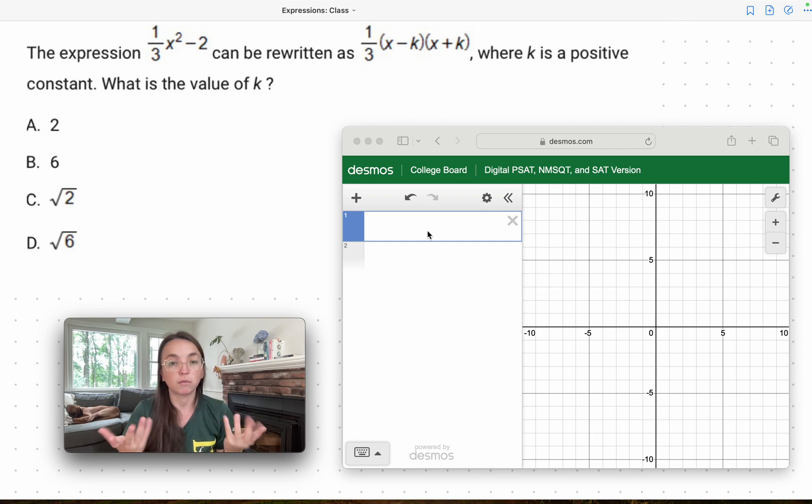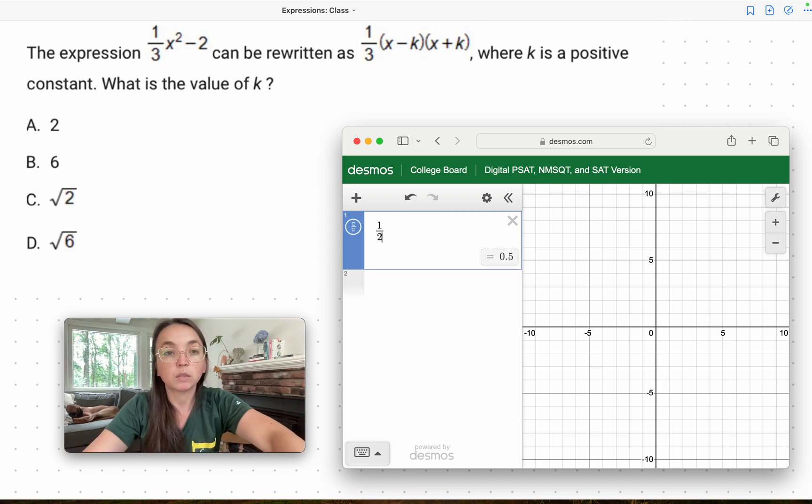Positive constant just means it's a positive number. So what it's saying is that one side of the equation, the 1/3 x² - 2, is equal to the other side of the equation. So what we're simply going to do in Desmos is input that equation.